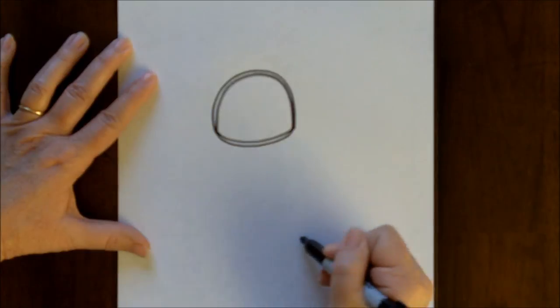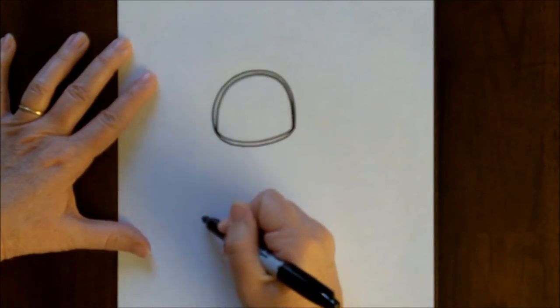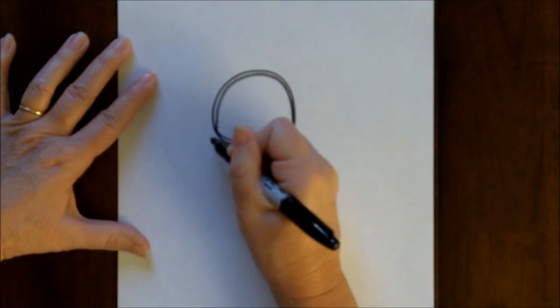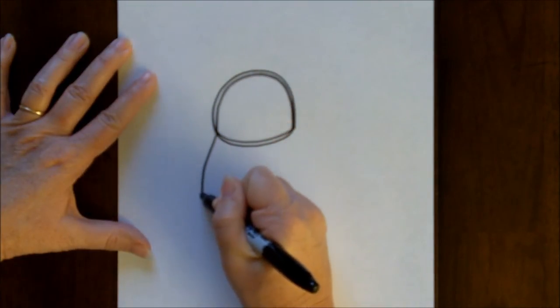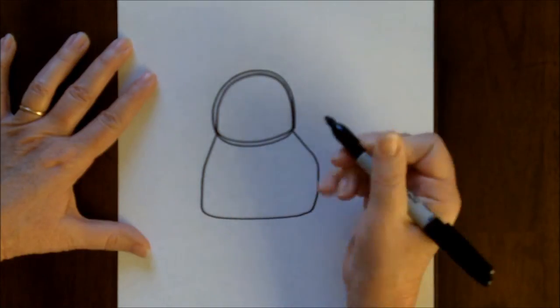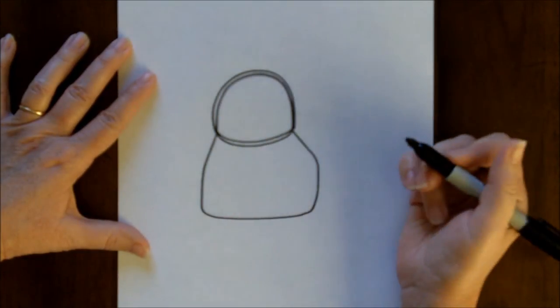Now for the shape of your handbag, you can have that any shape. It can be round, it can be square, it can be kind of triangular, so you decide what you'd like on the shape of that. Just make the shape right under those two double lines.